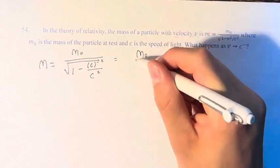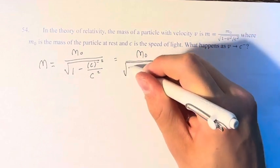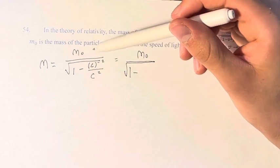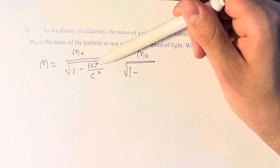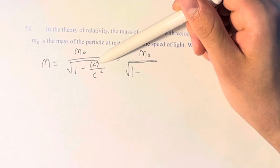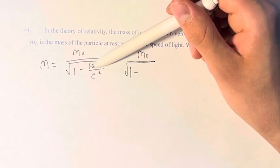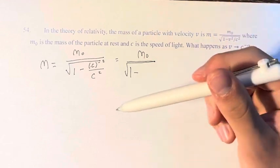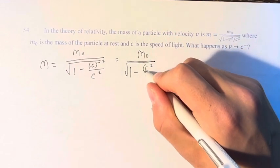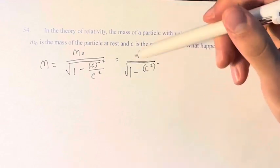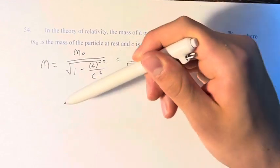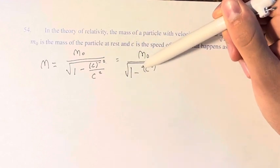This equals m₀ over the square root of 1 minus... If we are approaching c from the left, that means we have values very slightly less than c and we're squaring them. That means we're approaching c² from the left. Values slightly less than c are going to produce values slightly less than c².